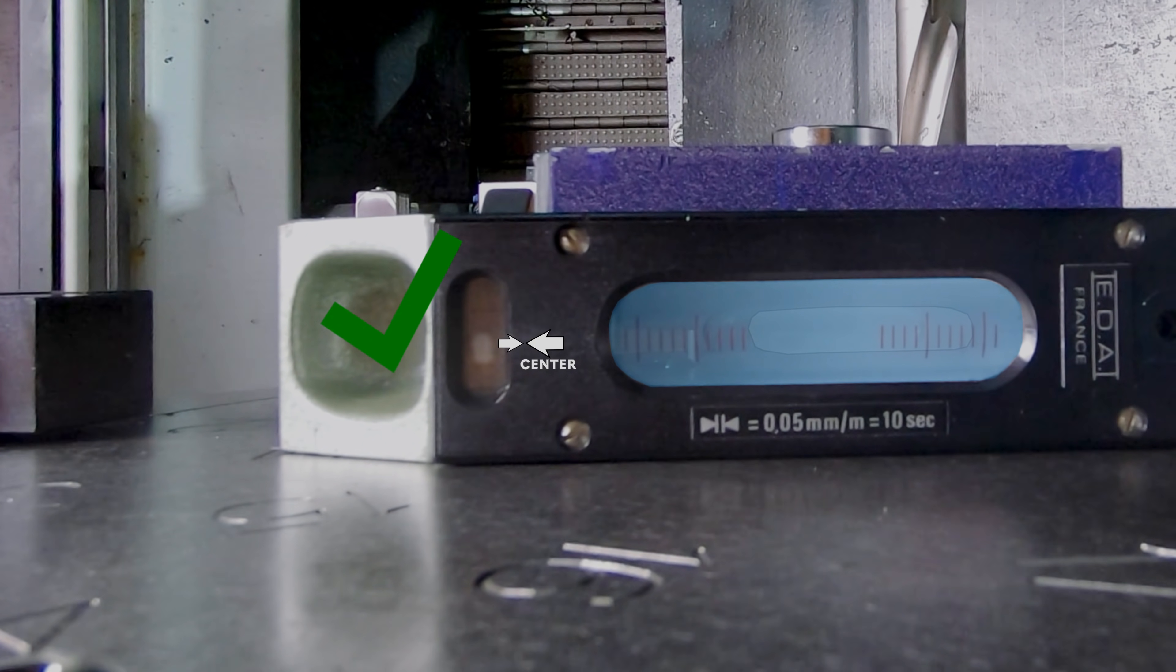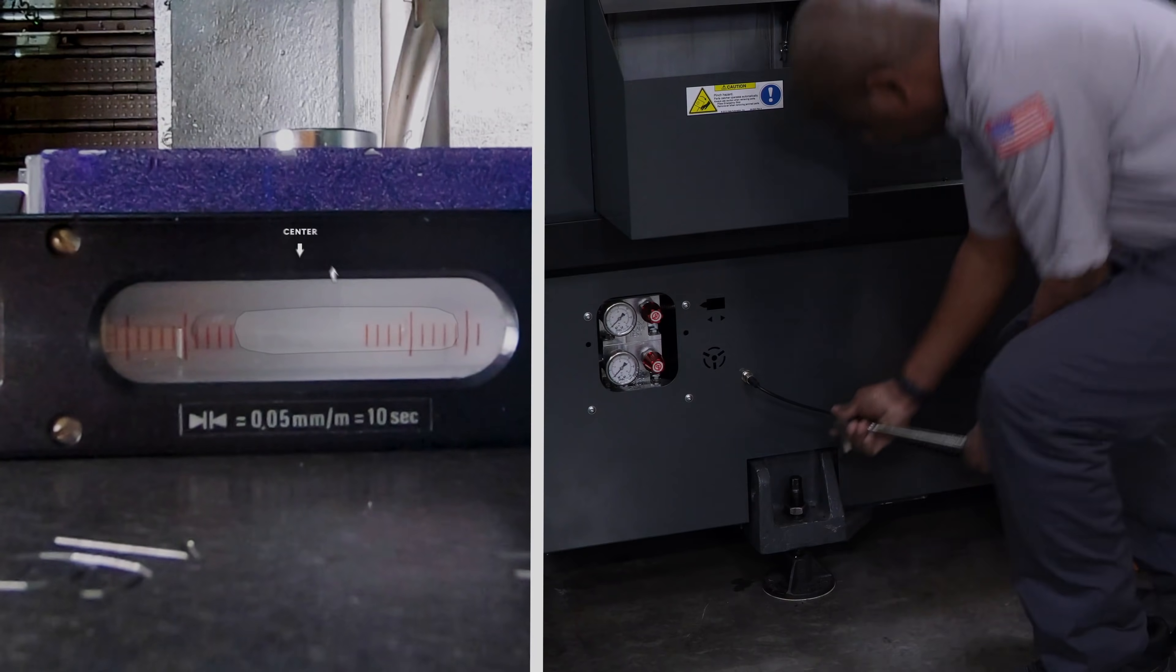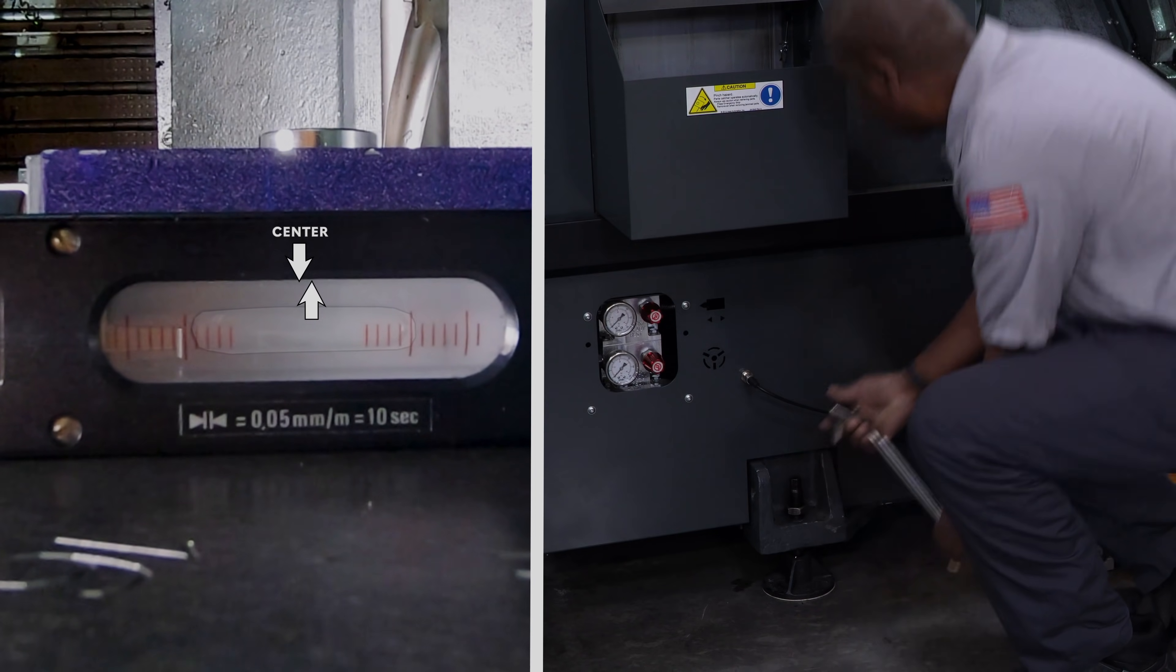Now, look at the bubble in the large vial which is parallel to the X axis. Raise the front left leveling screw to bring the bubble to the center of the vial.